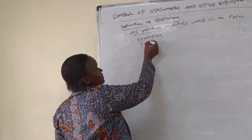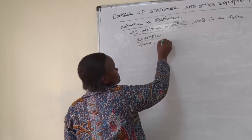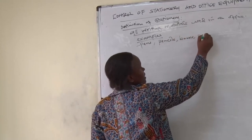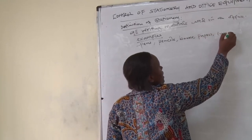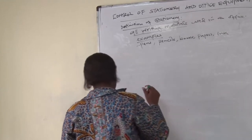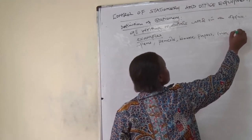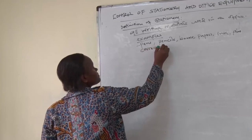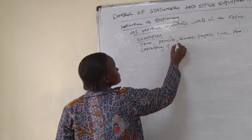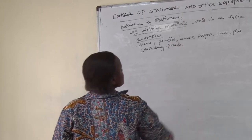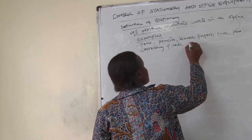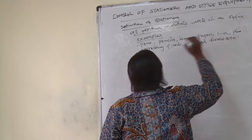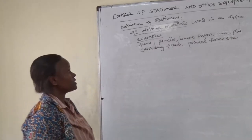Examples of writing materials include pens, pencils, books, papers, ink, pins, and printed forms. There are so many. Any writing material which is used in an office, we call it stationery.